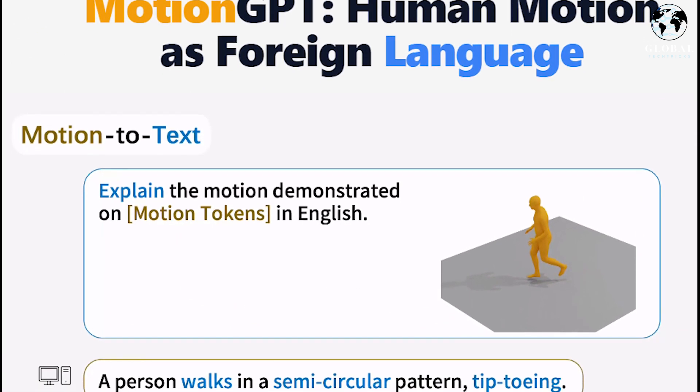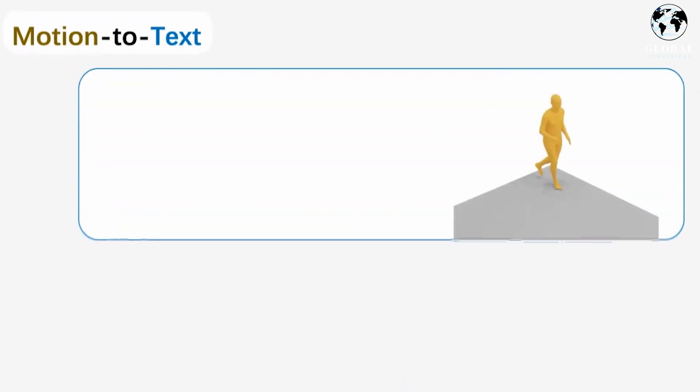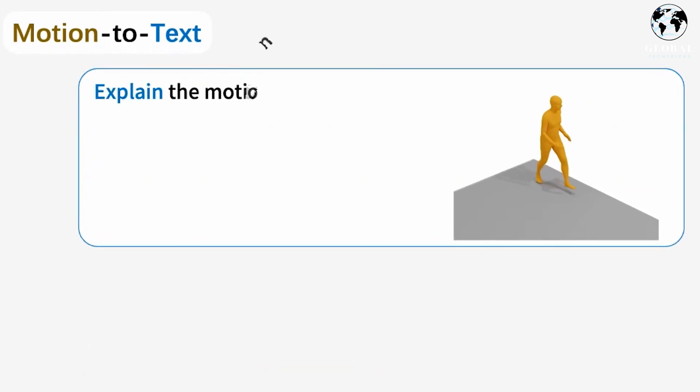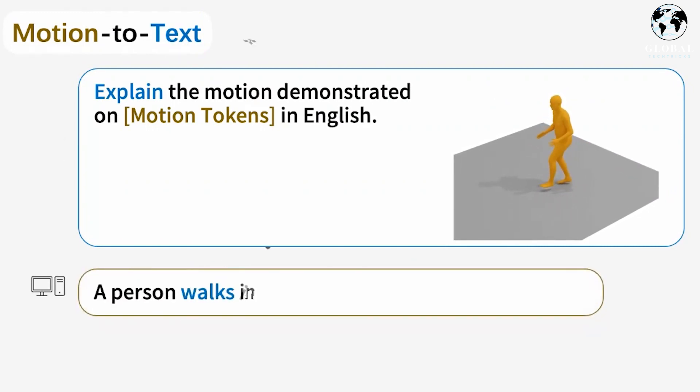Another notable feature of Motion GPT is its motion-to-text capability. In this functionality, users can provide a demonstration of a motion using motion tokens in English, and Motion GPT generates a descriptive response. For instance, if asked to explain a specific motion,